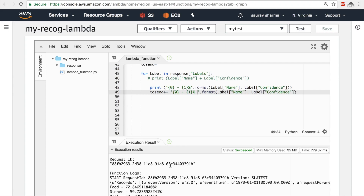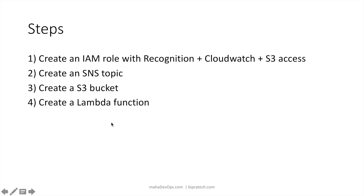And that's how you do image recognition with Lambda, S3, Rekognition, and the other services we used. To quickly review: we created an IAM role, created an SNS topic, created an S3 bucket, then a Lambda function using a blueprint, made some code changes, and we were able to send ourselves an email whenever an image is uploaded to our S3 bucket. I'll post the code in the description.